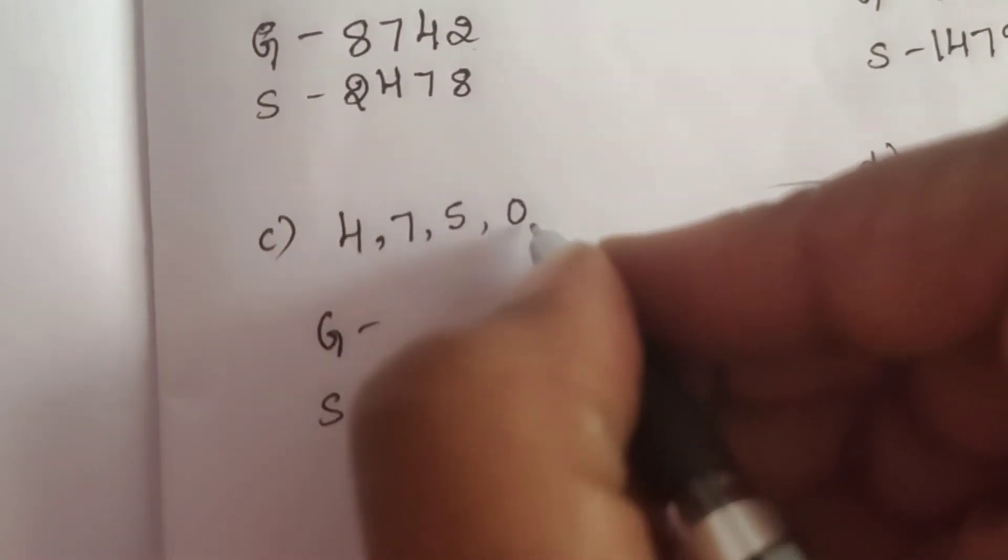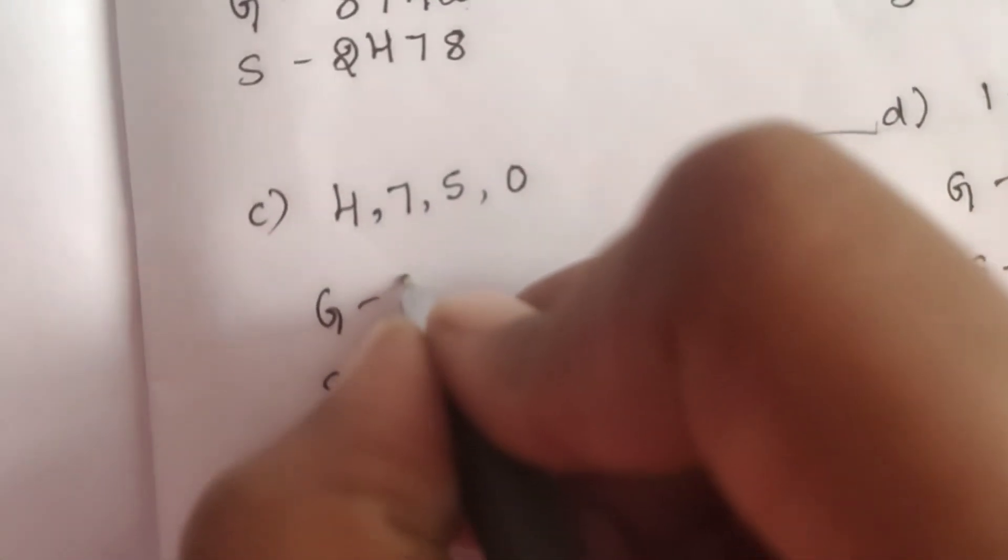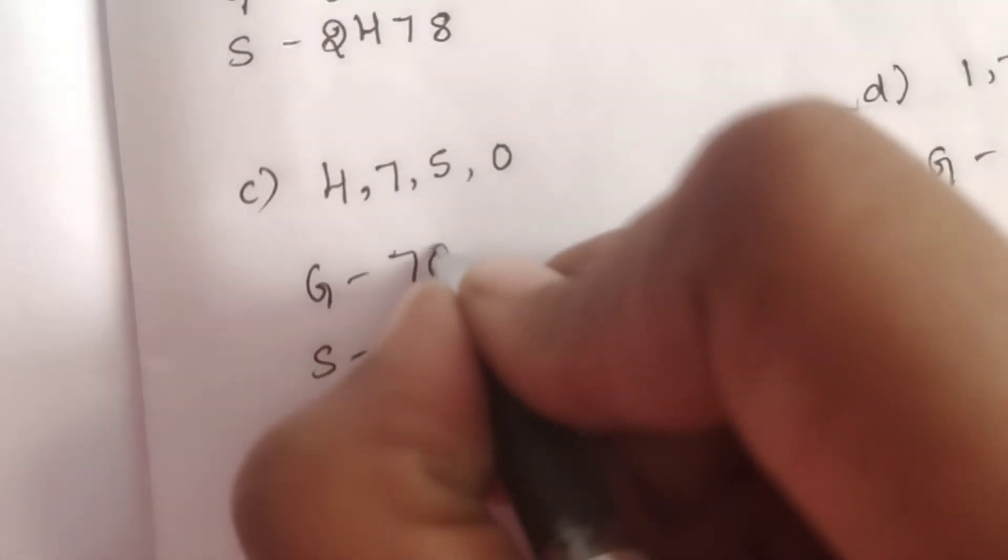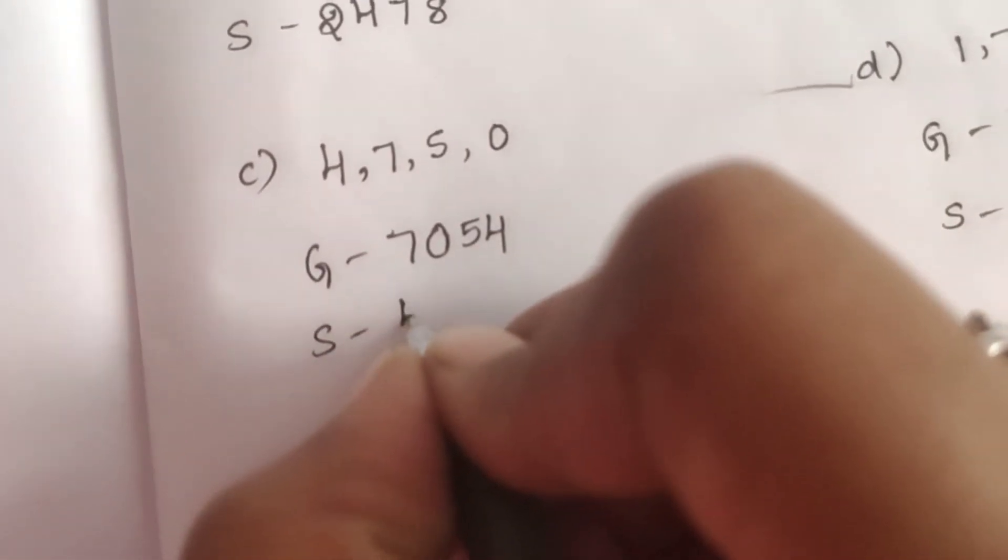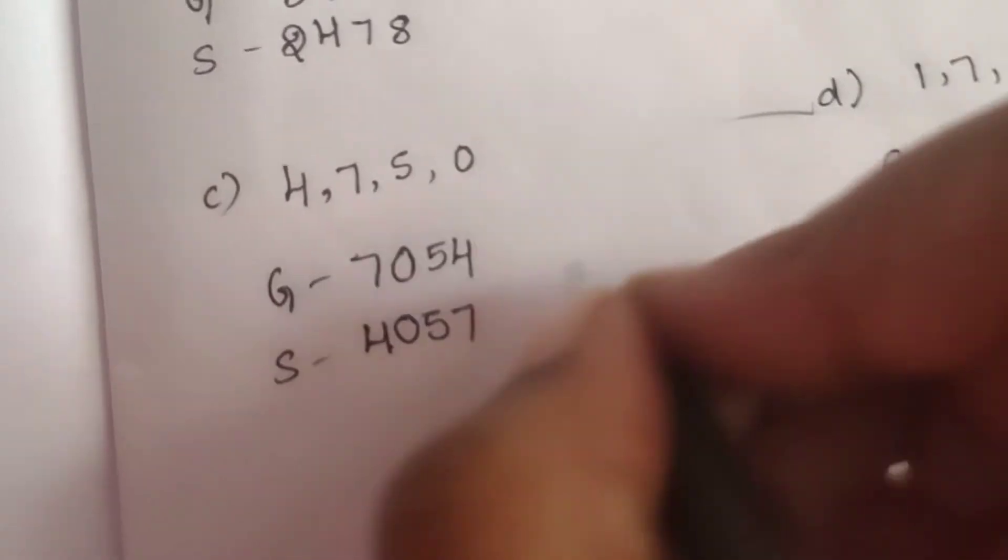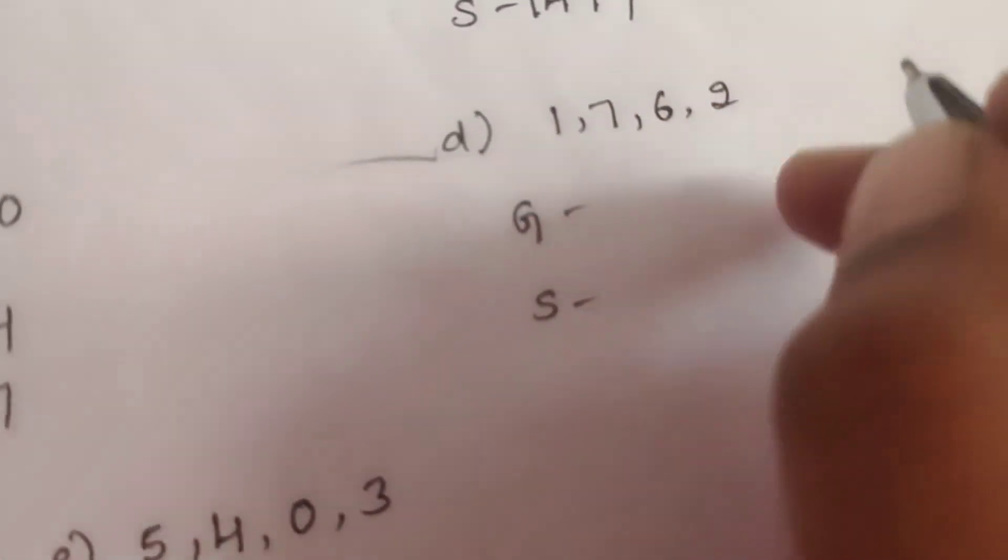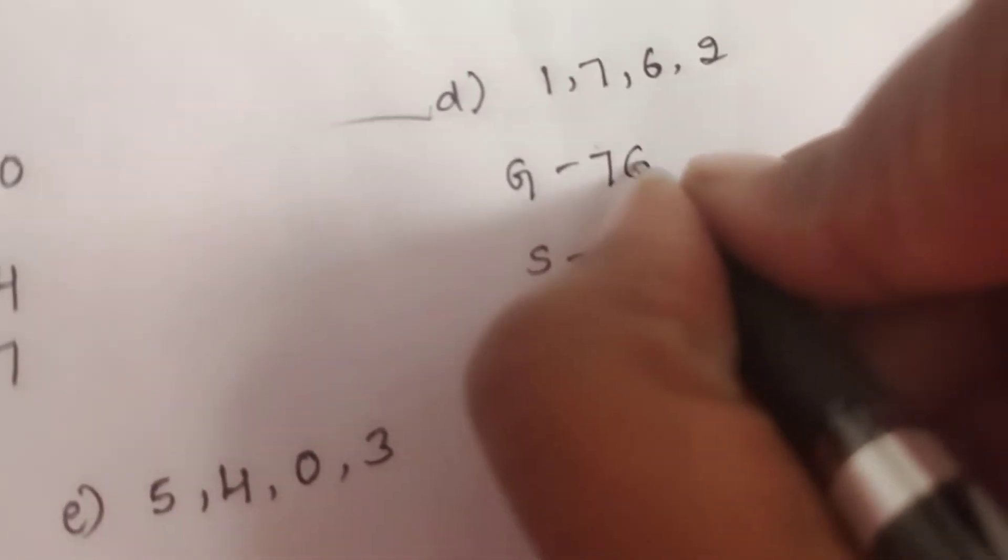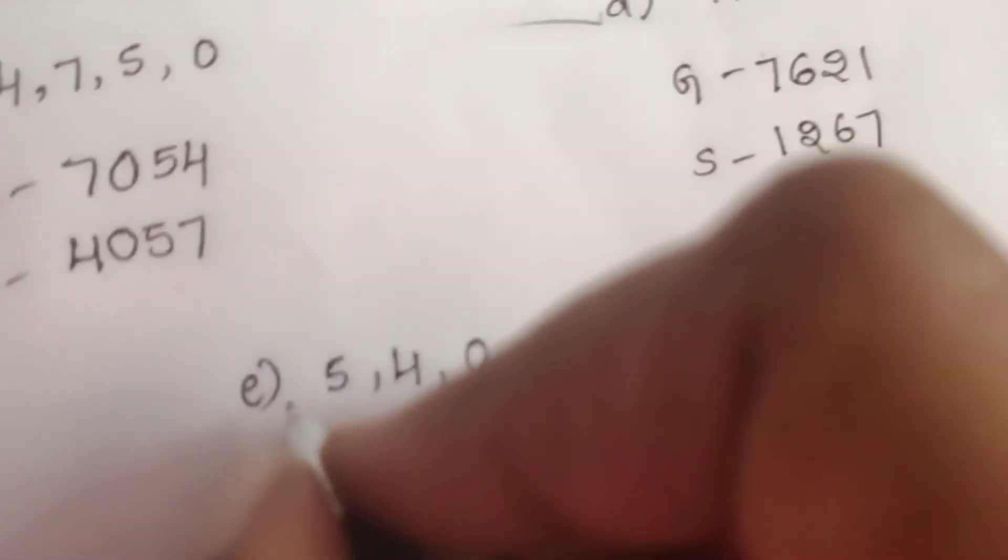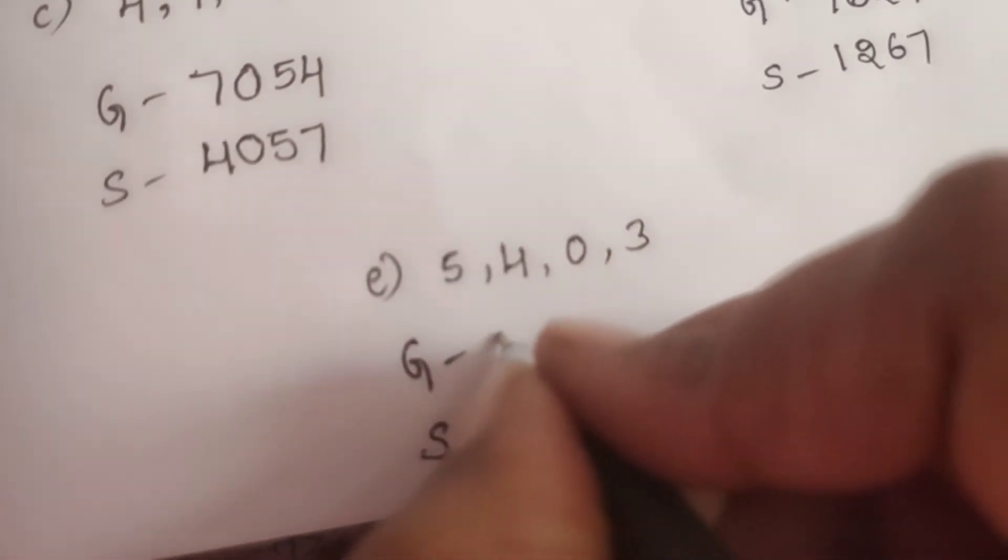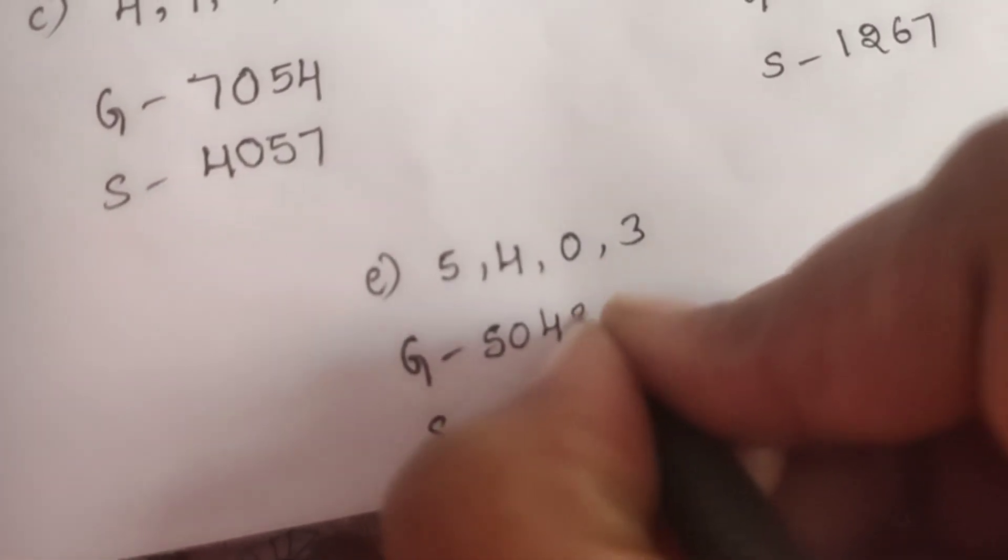Next, third one: 4, 7, 5, 0. Second one: 1762, so 7621 is the greatest, 1267 is the smallest. Last one: 5403, so 5430 is the greatest, 3045 is the smallest.